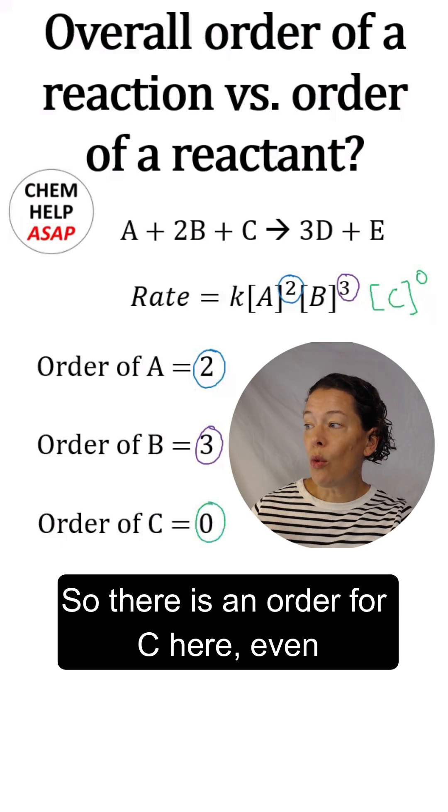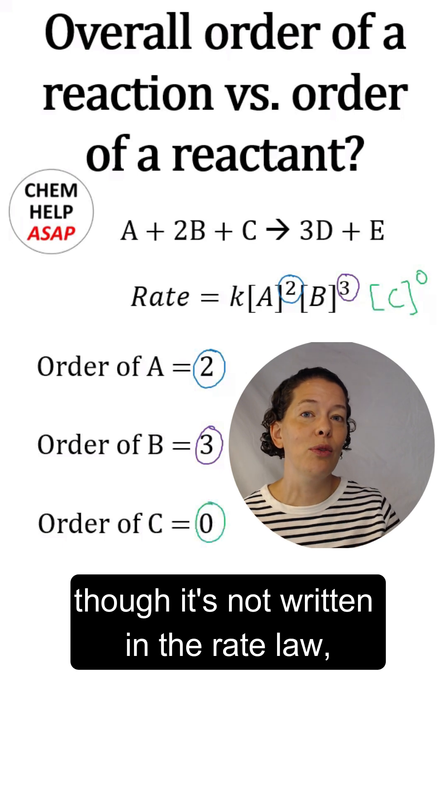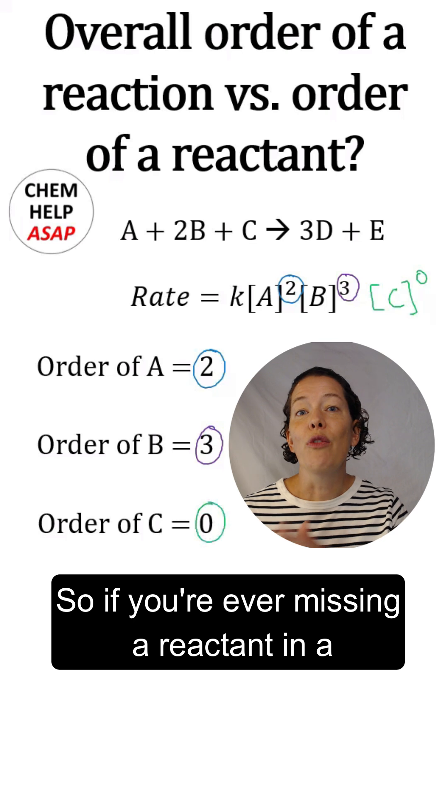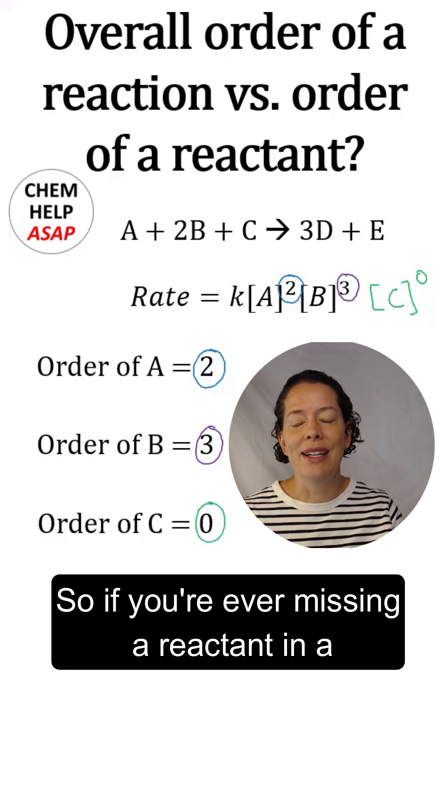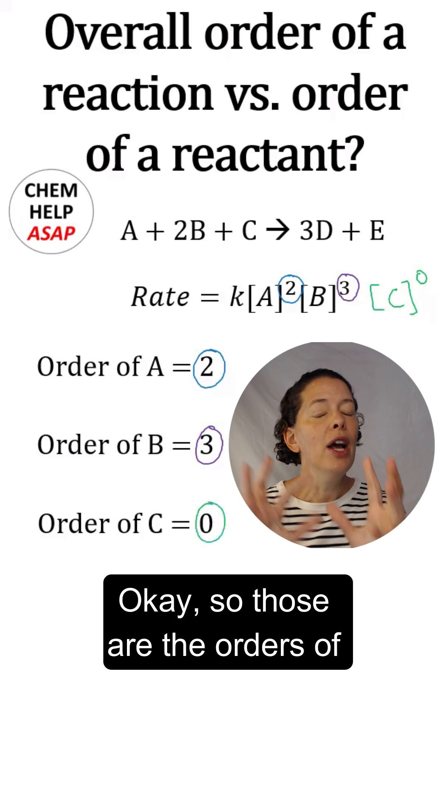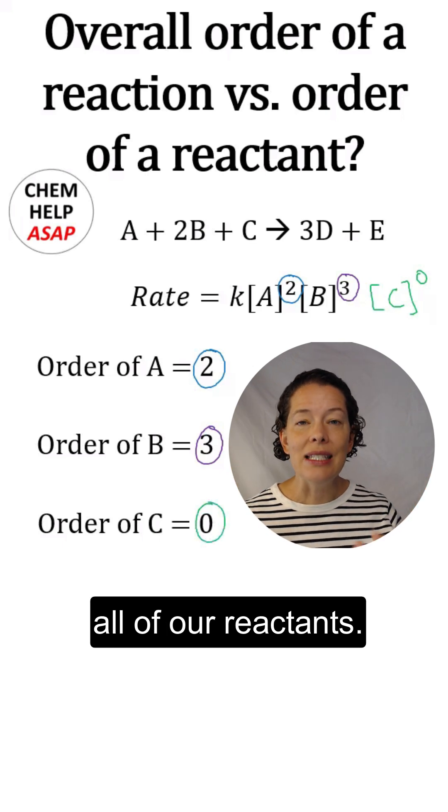So remember, anything raised to the 0 power equals 1. So there is an order for C here, even though it's not written in the rate law, because once you've multiplied by 1, we don't tend to write that in the rate law. So if you're ever missing a reactant in a rate law, that means that that reactant, the order of it, is 0.